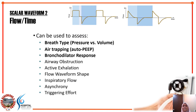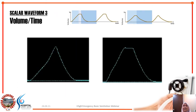In summary, from the flow-time curve you can assess the breath type and usually determine whether it is pressure or volume mode, check for air trapping, and also check for bronchodilator response.